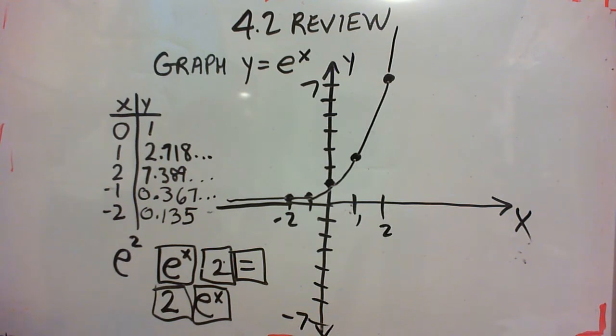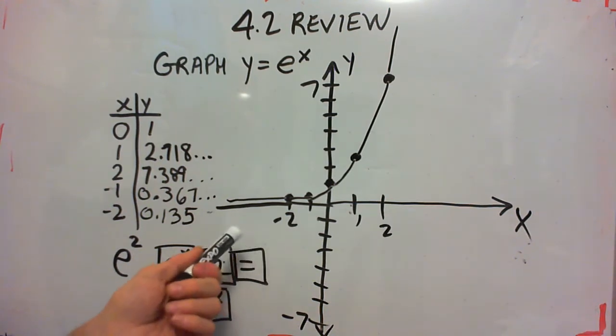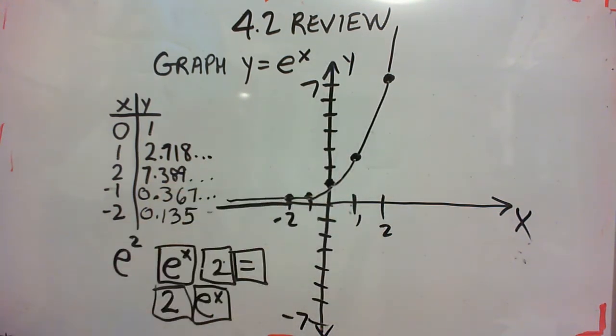And so we get the L shape curve. That's typical. And in the notes, I believe I have 2 to the x graphed. It looks very similar to this.